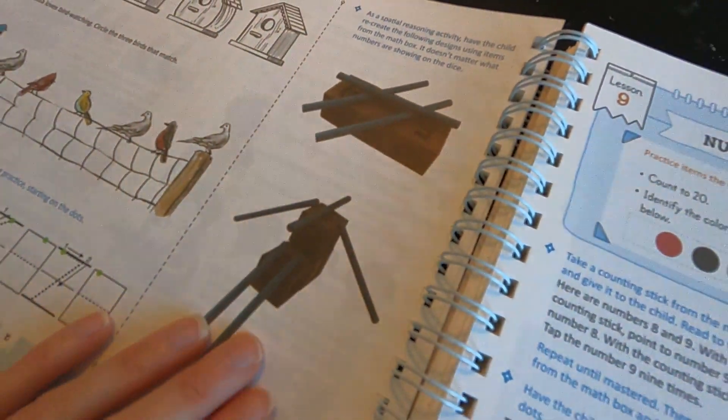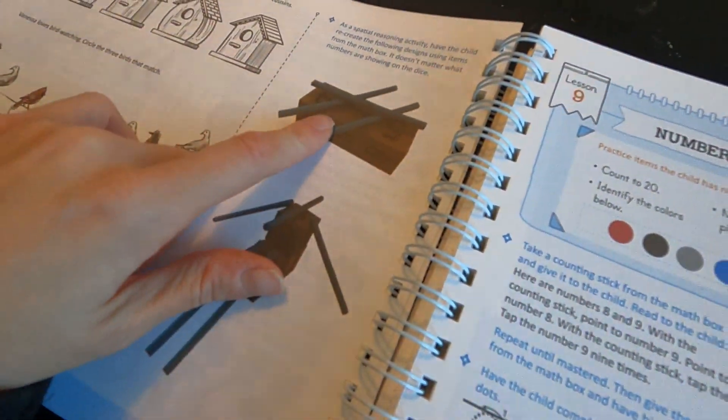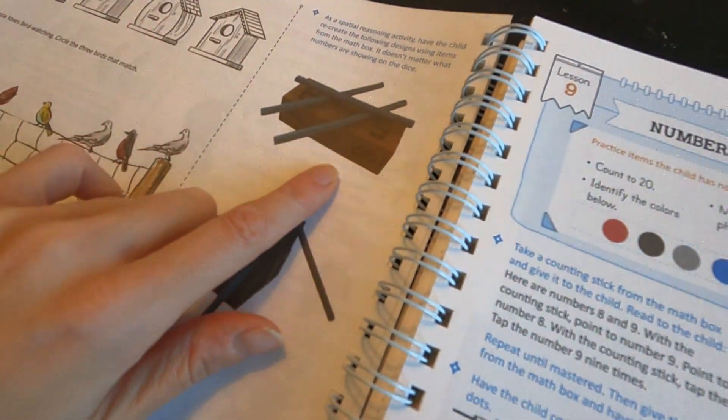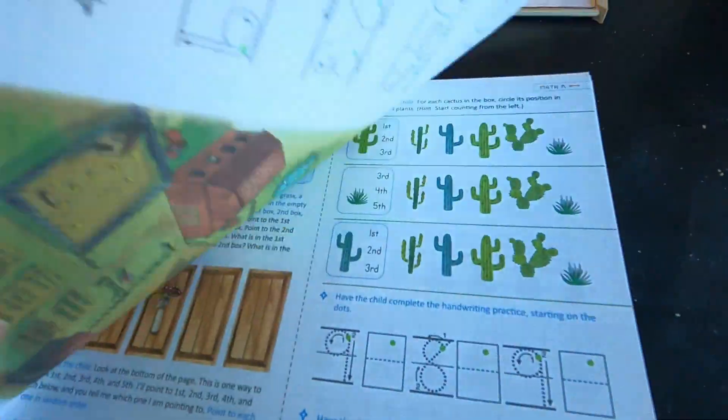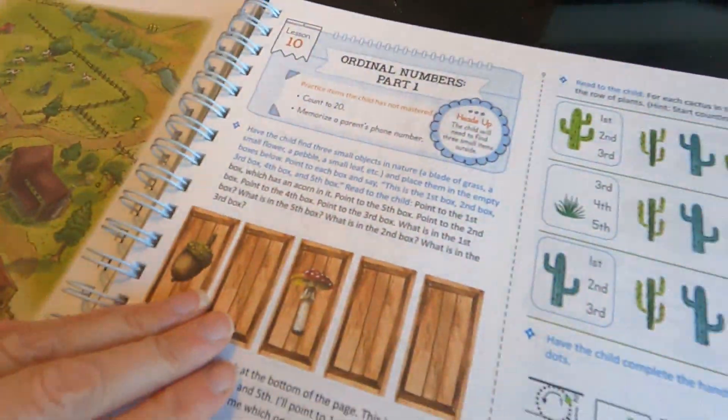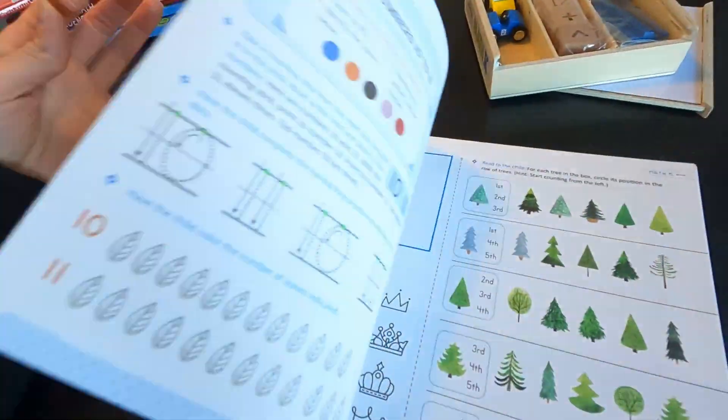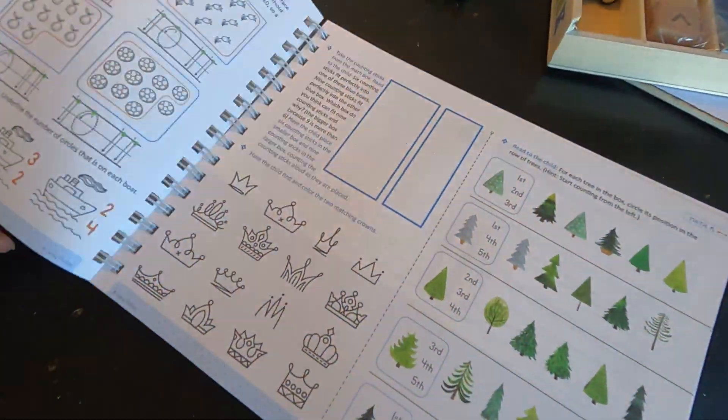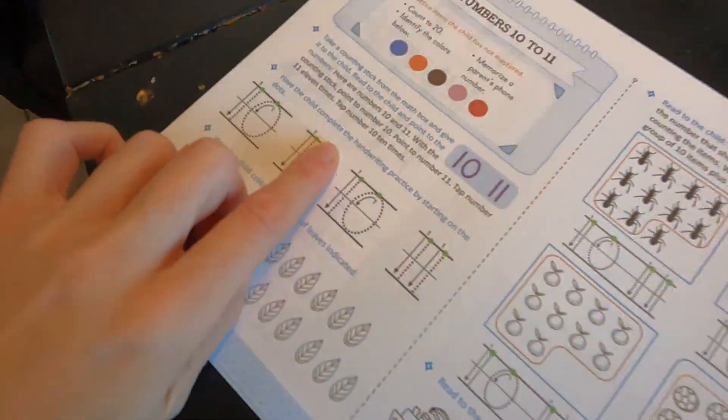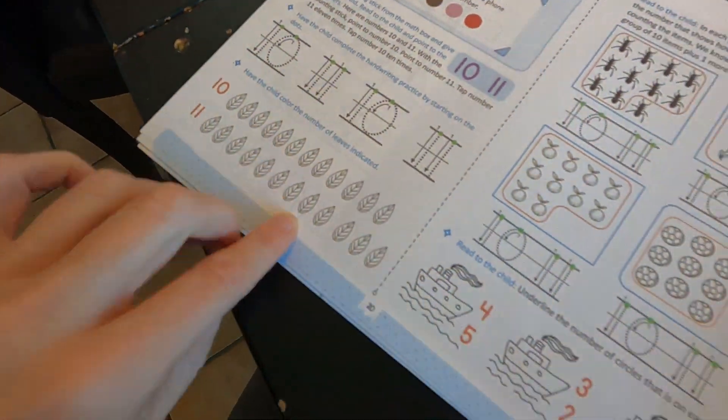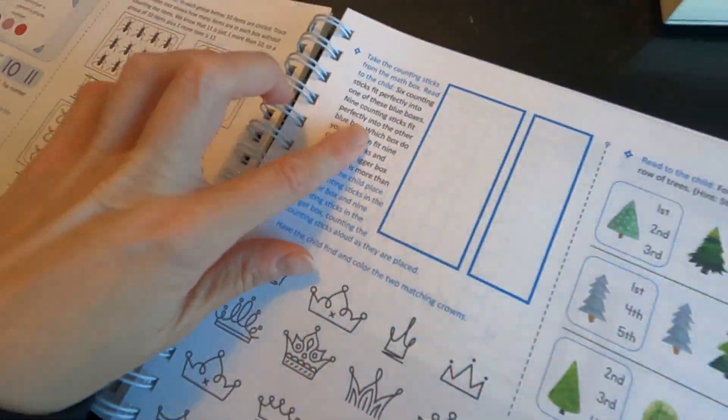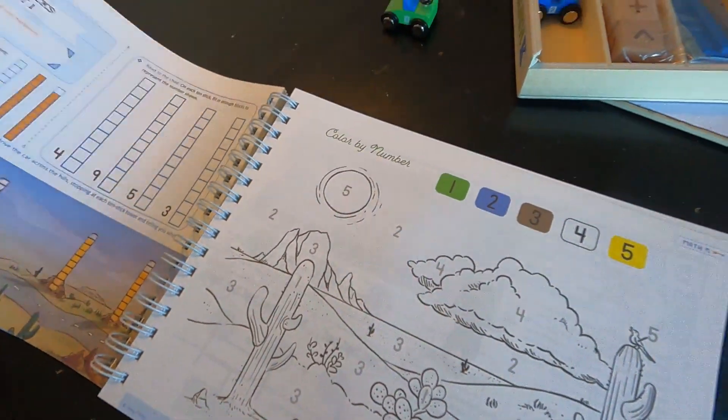So it's very... I mean it's not boring, and the lessons get longer as you go through it. Spatial reasoning activity: have the child recreate the following designs using items from the box. All right, so it is very... I mean it's good and it's beautiful, it's just not my preferred type of learning, of teaching. It's not my preferred type of teaching. But I like that it's only one book - there's no teacher's manual, so it's just all in line here, right? So you read the black. I like that.